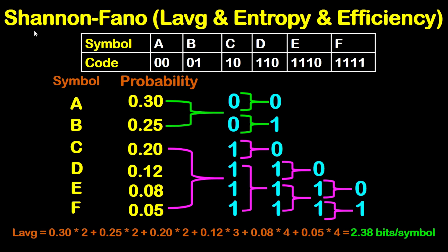In this tutorial, we are going to get for Shannon Fano coding the L average, entropy, and efficiency. So let's start by the L average. To be able to get the L average, multiply the probability of the symbol by the length of code for the symbol.